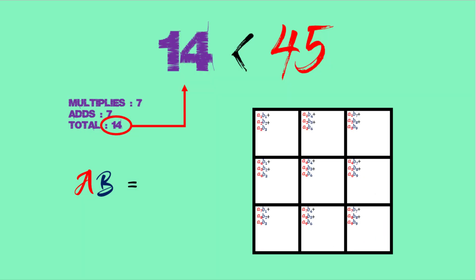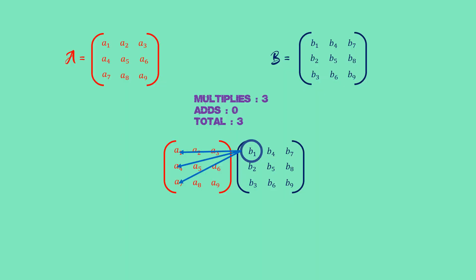With the power of parallel processing, dynamic programming, and some geometry, we can dramatically shrink the amount of time steps needed to multiply these matrices down to 14. In the brute force method, we had to use every matrix element multiple times.